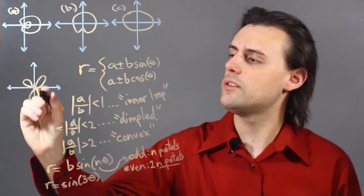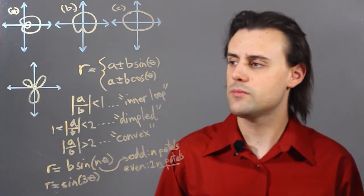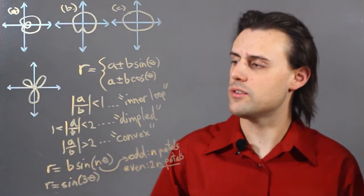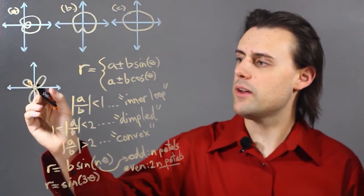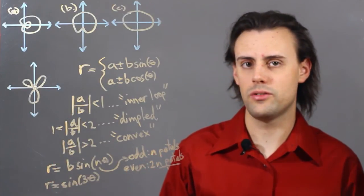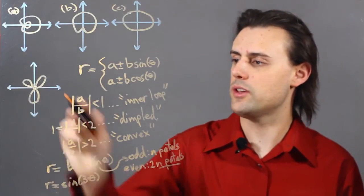So we notice that there are various crossings at the origin, and that this value cannot exceed 1, which is the value of b, and that we have 3 equal-sized petals symmetrically placed about the origin.